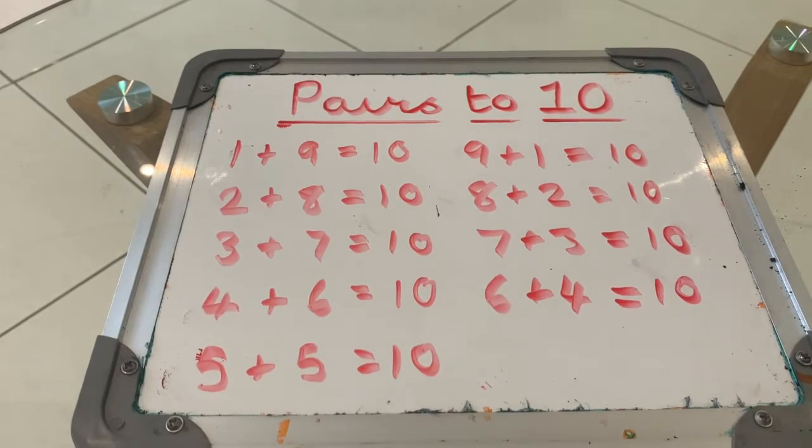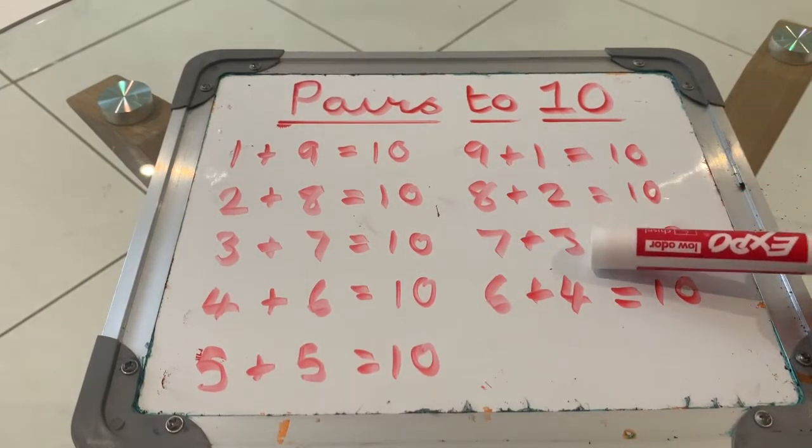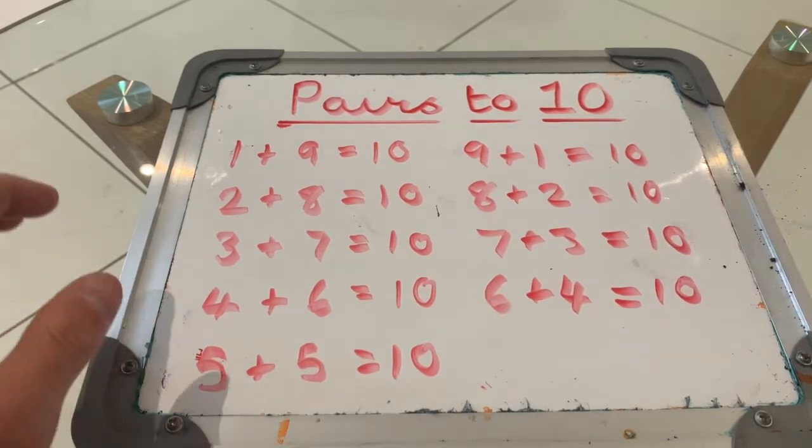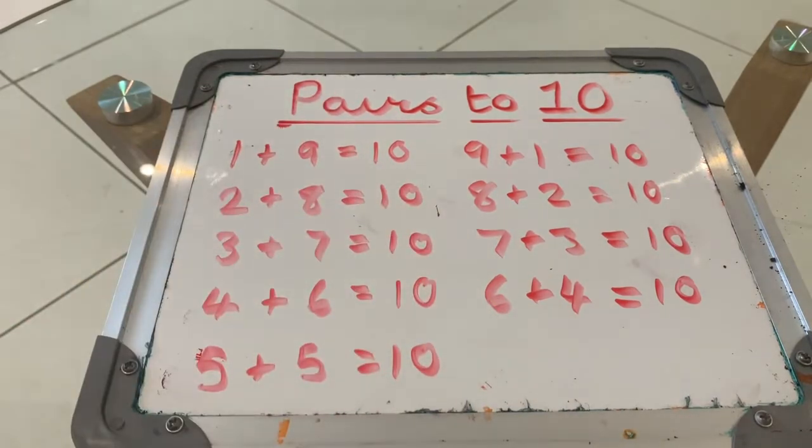When you have these memorized, it's very easy for your brain to say, okay, 7, how many more make 10? 3 more make 10. Or 2, how many more to make 10? 8 more makes 10. So practice these if you're having trouble with bridging to 10.